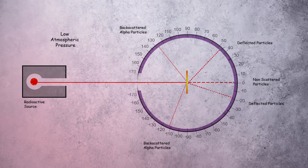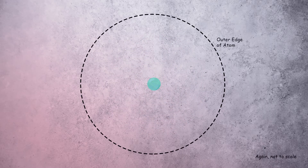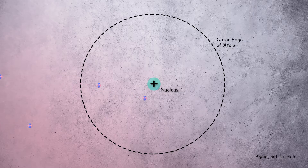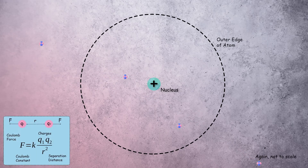Rutherford reasoned that to deflect the alpha particles backwards in this manner, the majority of the atom's mass must be densely packed at the centre of the atom. This nucleus must be positively charged, resulting in any close-flying alpha particles being deflected by the Coulomb force.